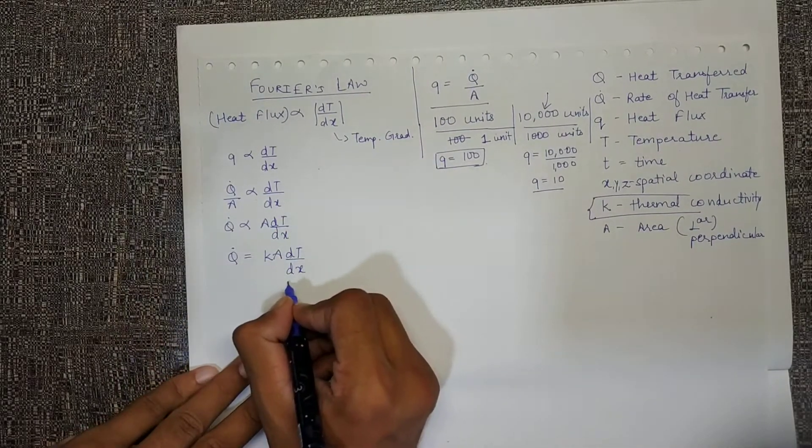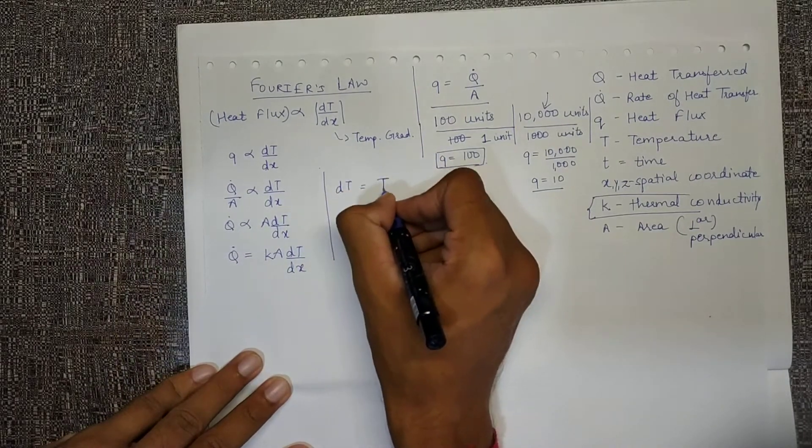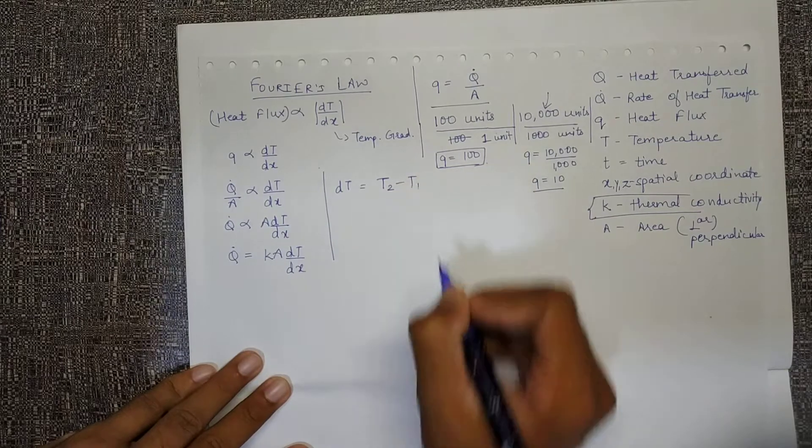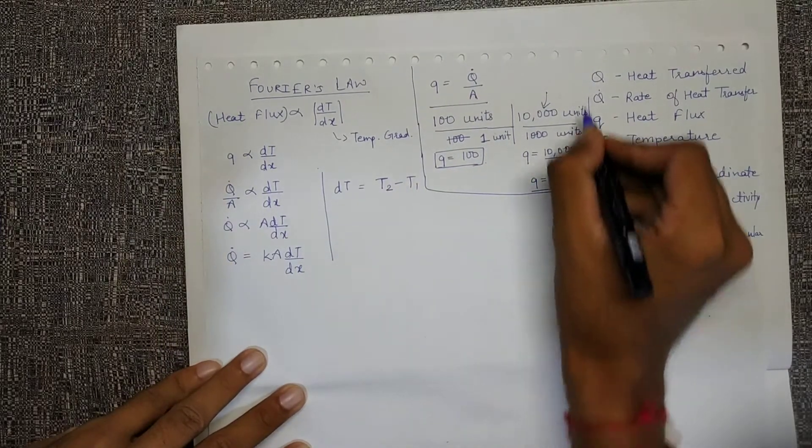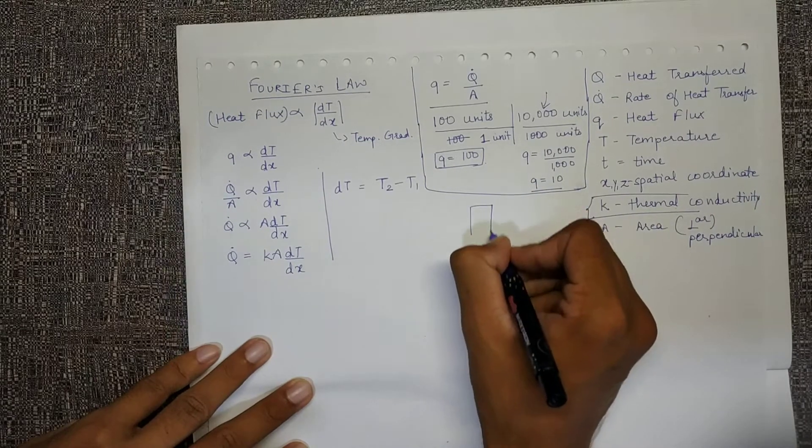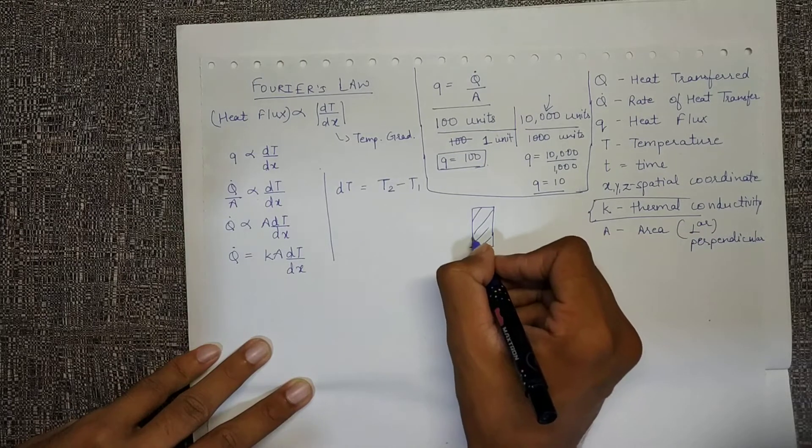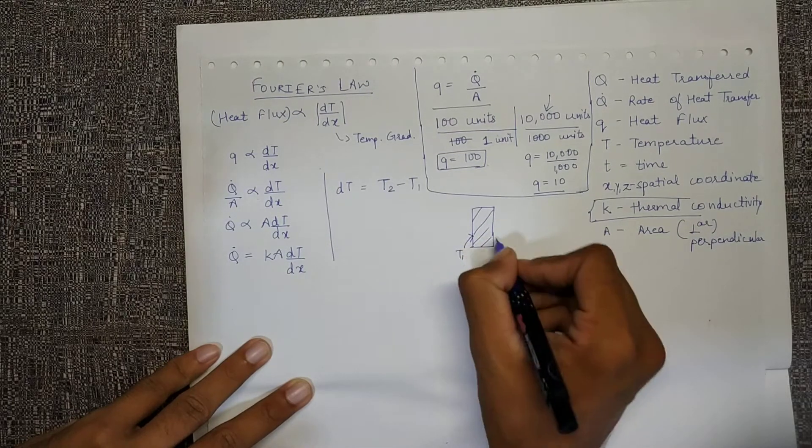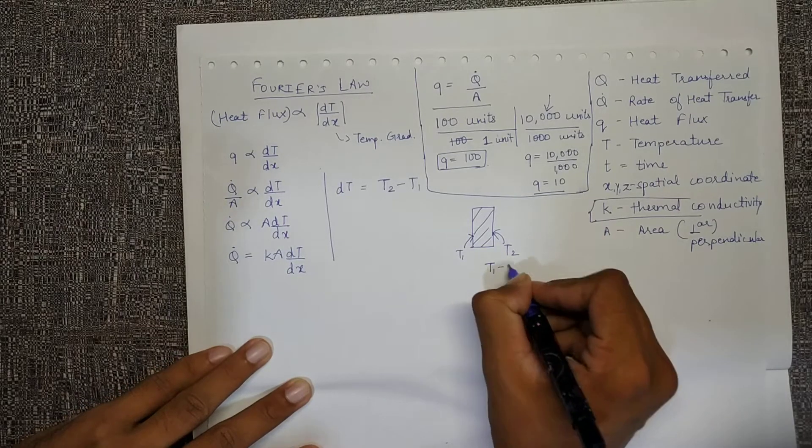Now let's look at this dt by dx term. That dt is usually defined as final temperature minus the initial temperature. But if we are given with some wall, let's say this is a brick wall, and we are given with temperatures at T1 and T2, so usually we will write them as T1 minus T2.